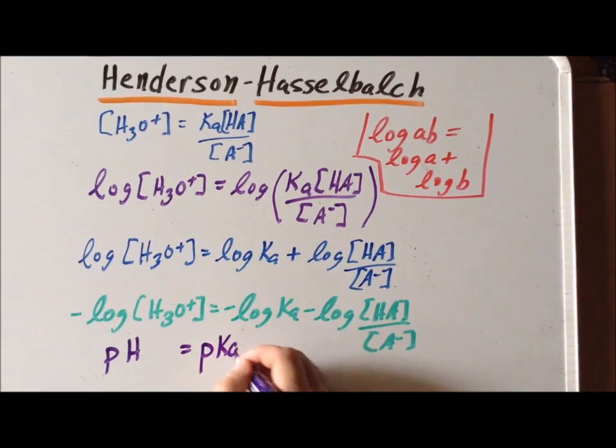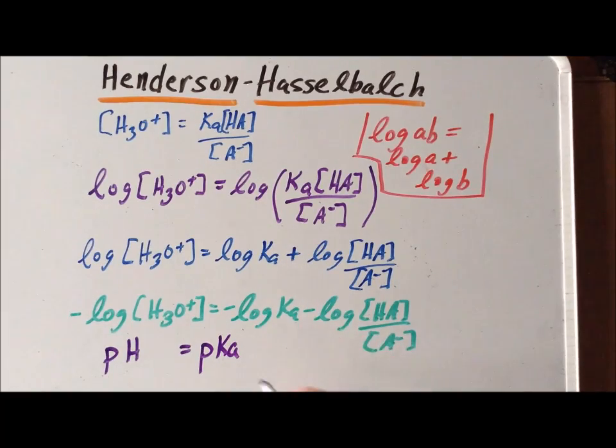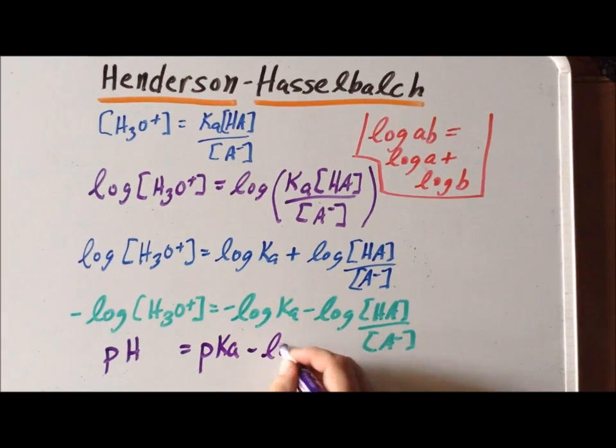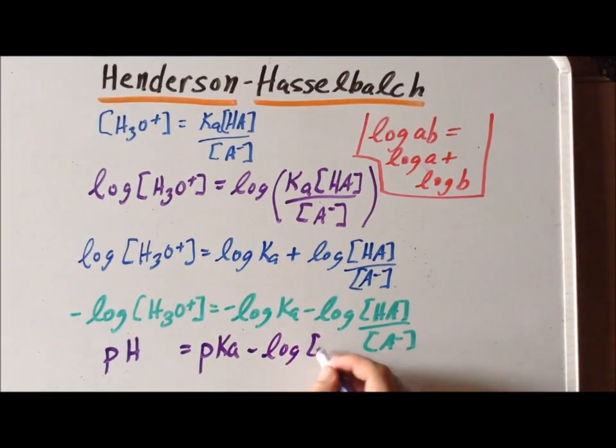And we'll continue to write the expression on the right as it is. We have minus the log of HA divided by A minus.